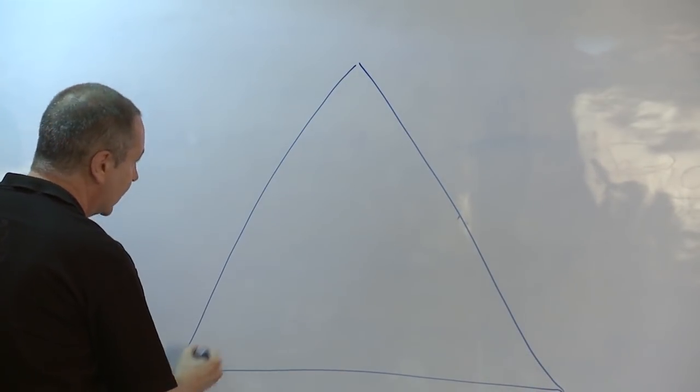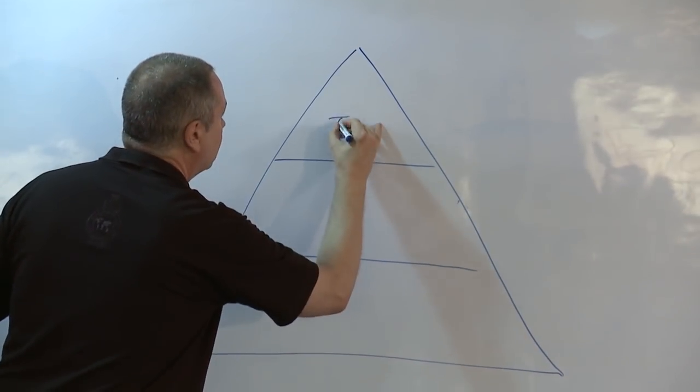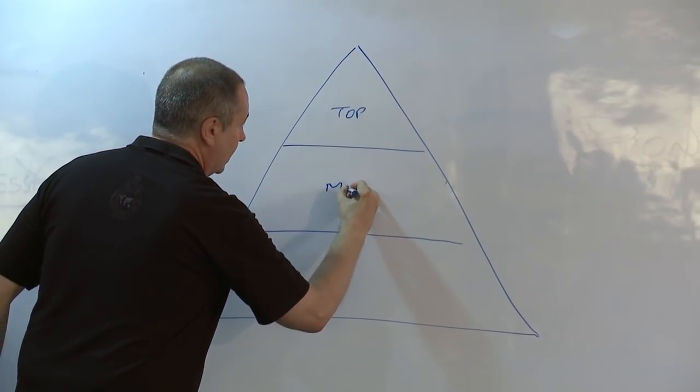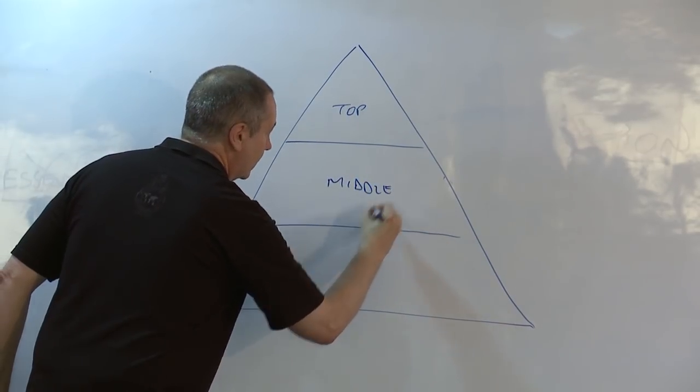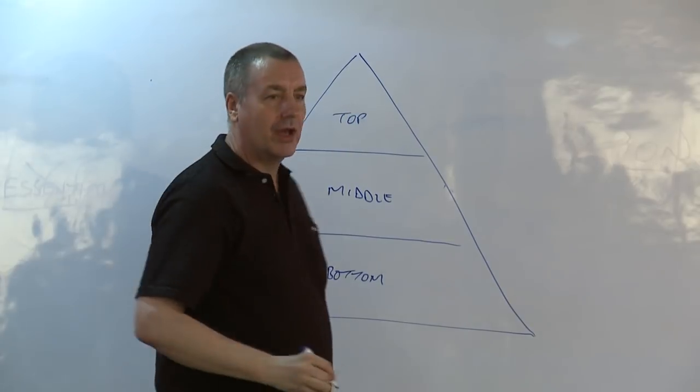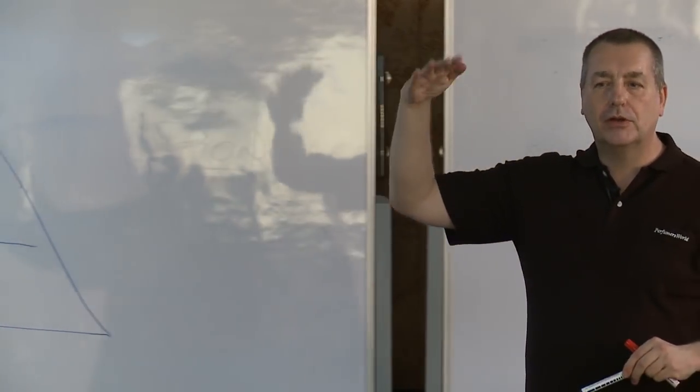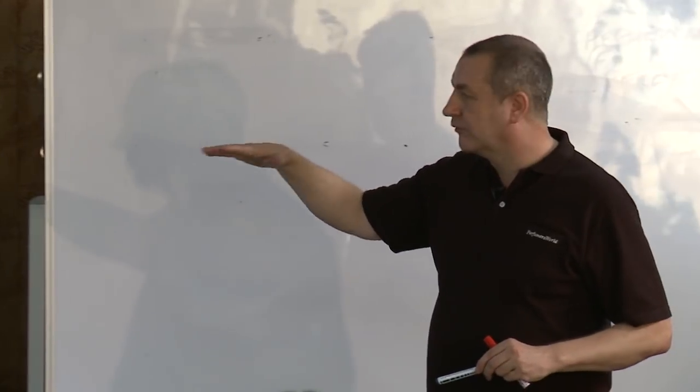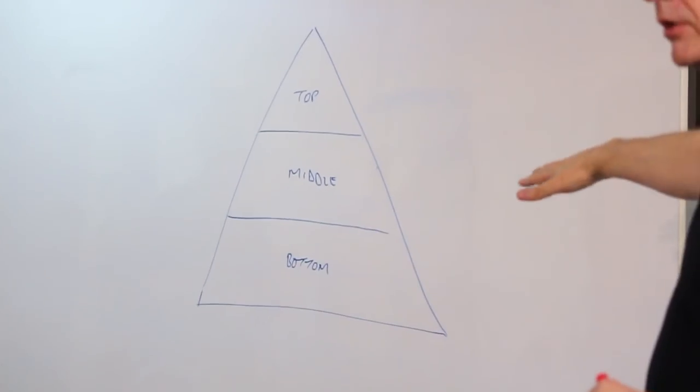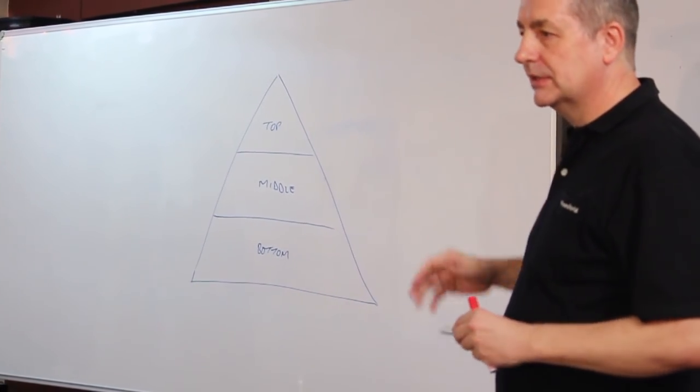So this is the classical top note, middle note, bottom note triangle. The idea is that the light notes, lemon and orange, are in the top note. The floral notes are in the middle, and on the bottom we have woods, musk, and things like that.